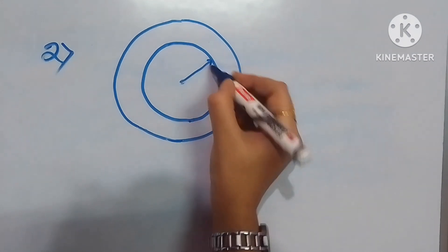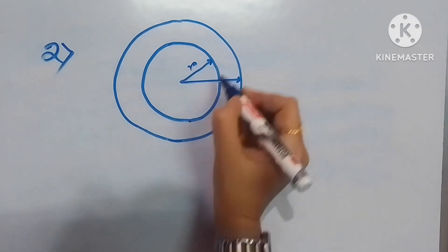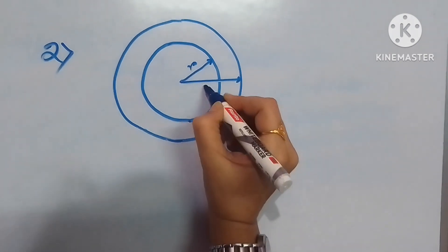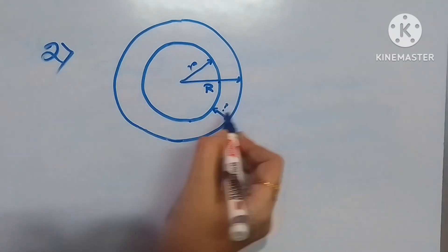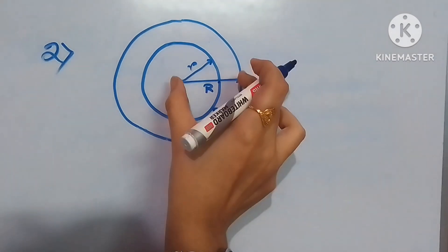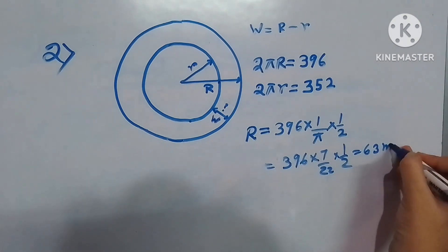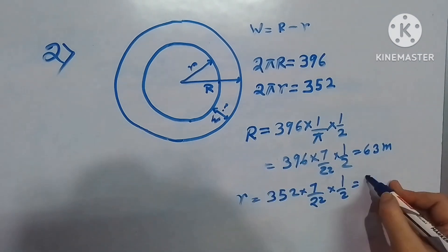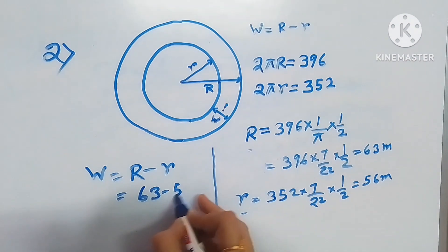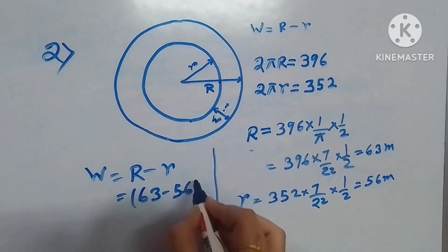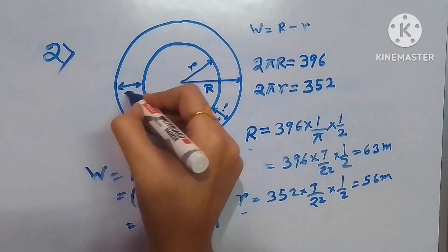In our second problem, one circular park is there and surrounded by one road. We have to calculate the width of the road. Here the two circles are there and both the circles perimeters are given. Suppose the two radiuses of the circles are capital R and small r. From the formula of the perimeter we will calculate both the radiuses of the two circles. And eliminating the smaller radius from the bigger one, we will get the width of the road.